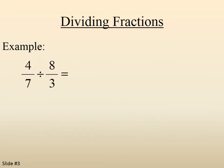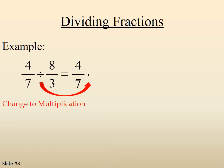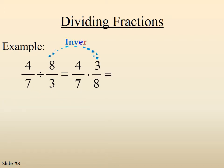Try this example: four-sevenths divided by eight-thirds. Four-sevenths is unchanged. We change the division symbol to multiplication. We invert the second fraction, so eight-thirds becomes three-eighths. So now the problem becomes four-sevenths times three-eighths.